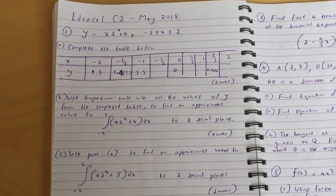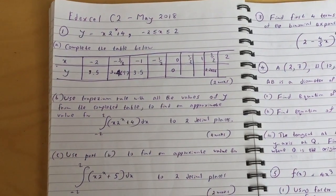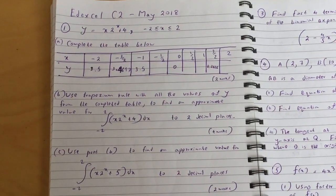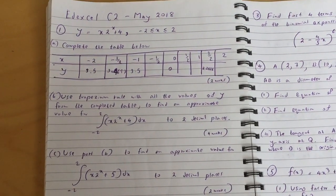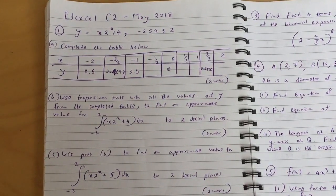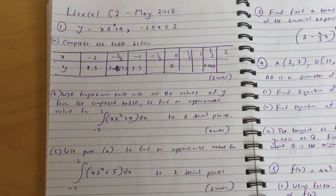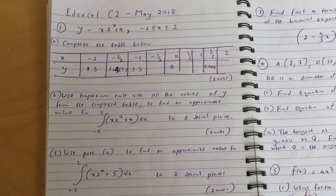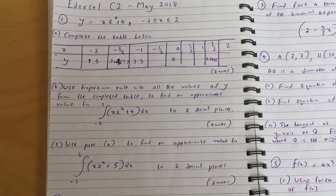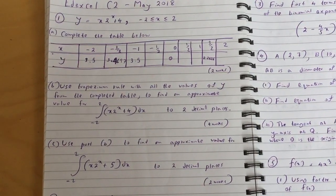y equals x times 2 to the power of x plus 4, and x is between minus 2 and 2. Complete the table below. So you've got some values missing. I'll just read out a couple of values: when x equals minus 2, y is 3.5; x equals minus 3/2, y is 3.4697; x equals minus 1, y is equal to 3.5, and so on.